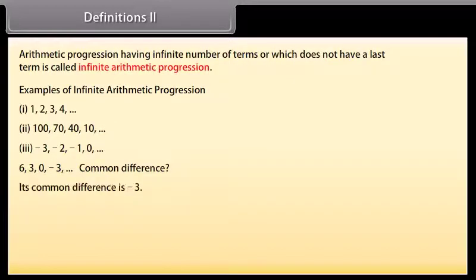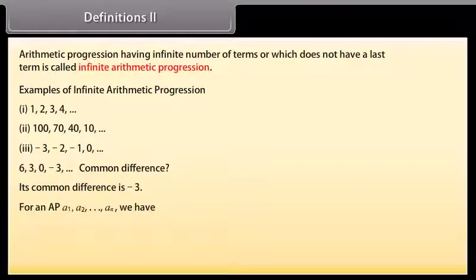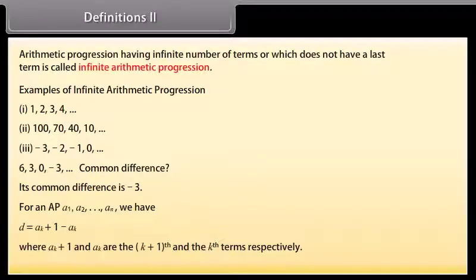In general, for an AP a1, a2, and so on up to am, the common difference d is given by: d equals a(k+1) minus ak, where a(k+1) and ak are the (k+1)th and the kth terms respectively.